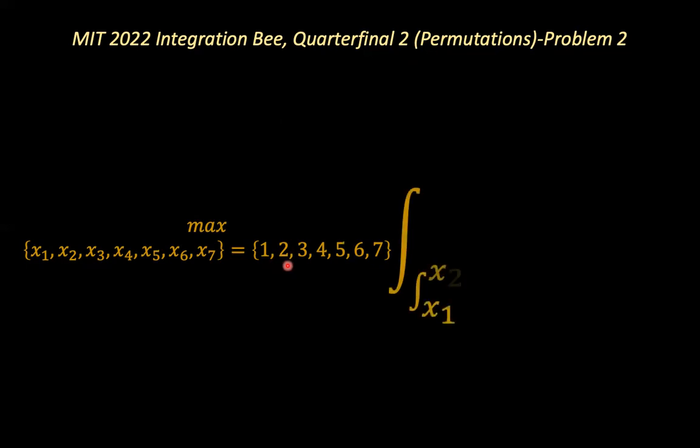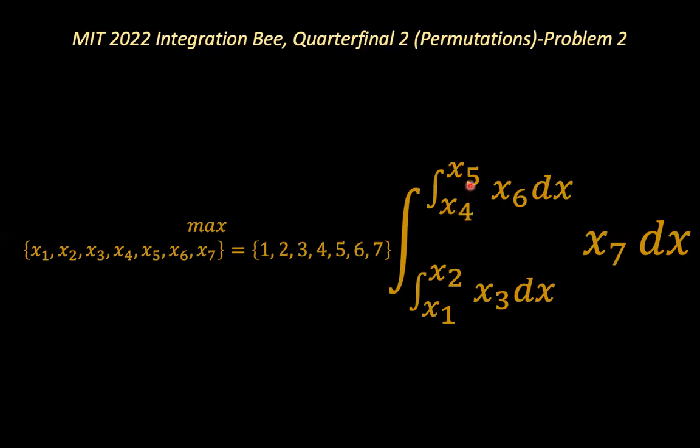And that is using the integral whose lower limit is the integral itself from x equals x1 to x2 of x3 to the upper limit x5 to x6, and that is used to integrate x7, which is also a constant. And so this is our problem today. And we'd like to find the maximum value out of this integral based on the right combination.